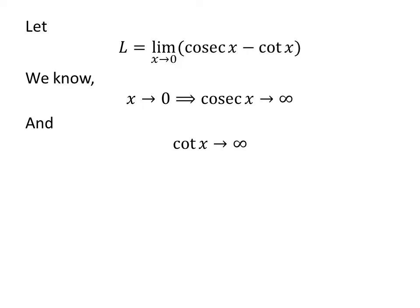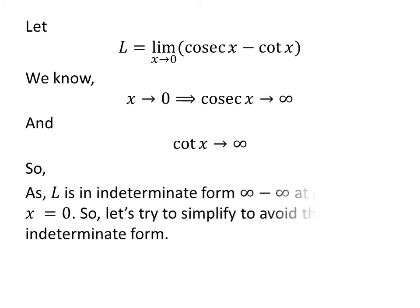We know that as x approaches 0, cosecant of x and cotangent of x approach infinity. So L is in indeterminate form — infinity minus infinity — at x equals 0. To avoid this indeterminate form, let us further simplify the limit.